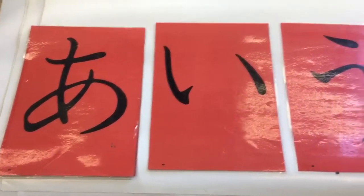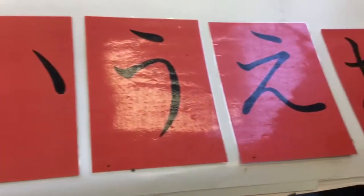These are the vowels in Japanese: A, I, U, E, and O.